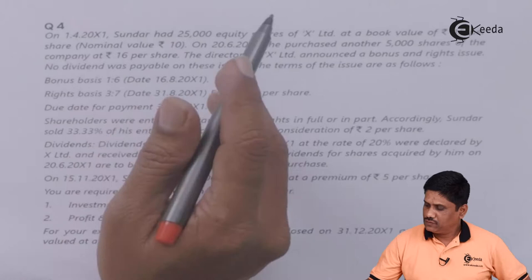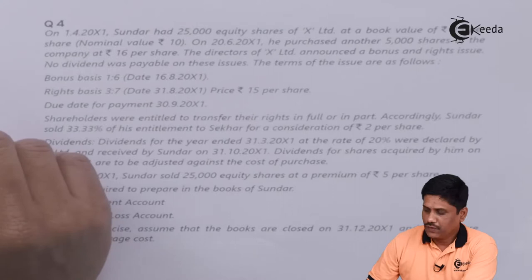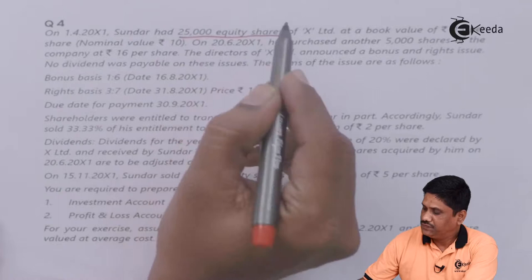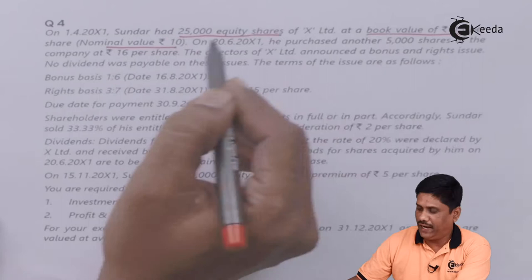Hello friends. See the question on your screen. On 1st April 200X1, Sundar had 25,000 equity shares of X Limited at a book value of Rs.15 per share having a nominal value of Rs.10 per share. So three things are given: number of shares, book value, and face value.